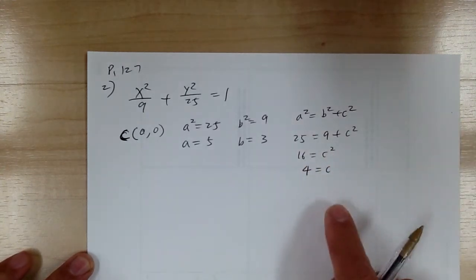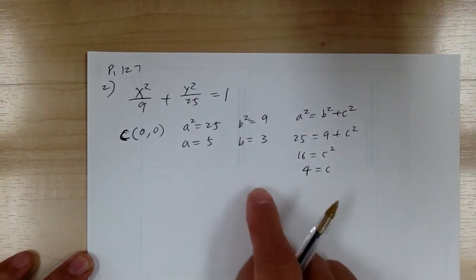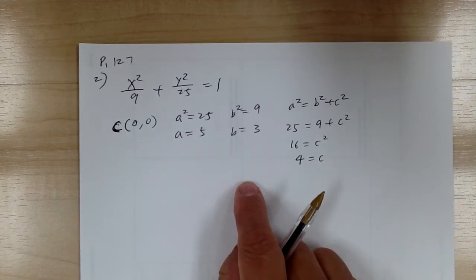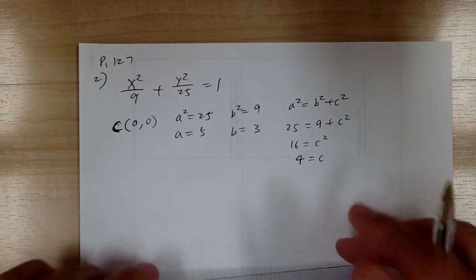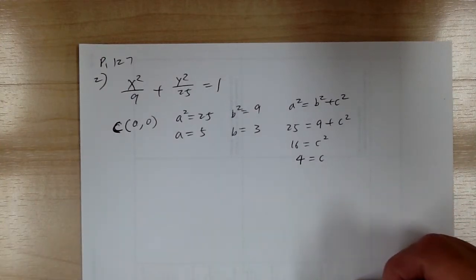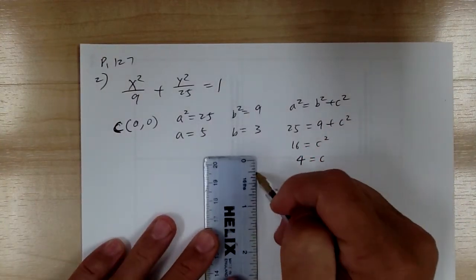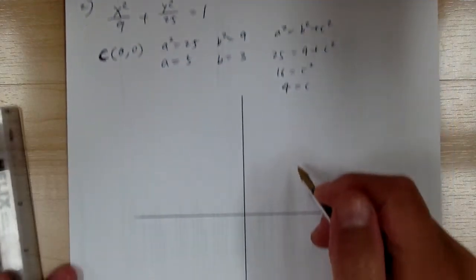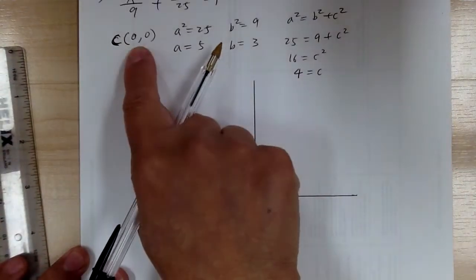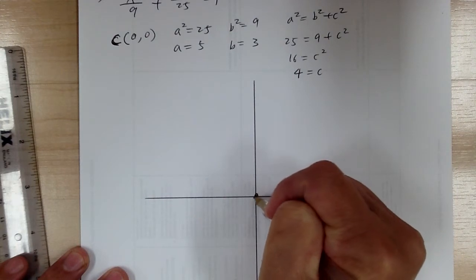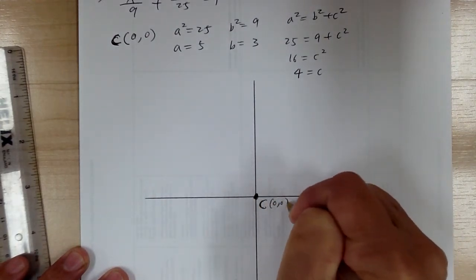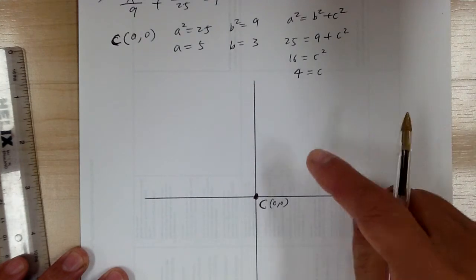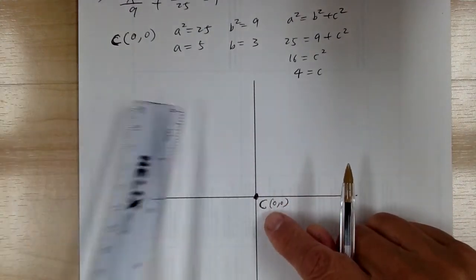Once you've got all this information, you can go and start to sketch things out. The center is at (0, 0). I'm going to use all capital letters to name all the points. You just follow what is under the letters — this one is going in the x-direction.